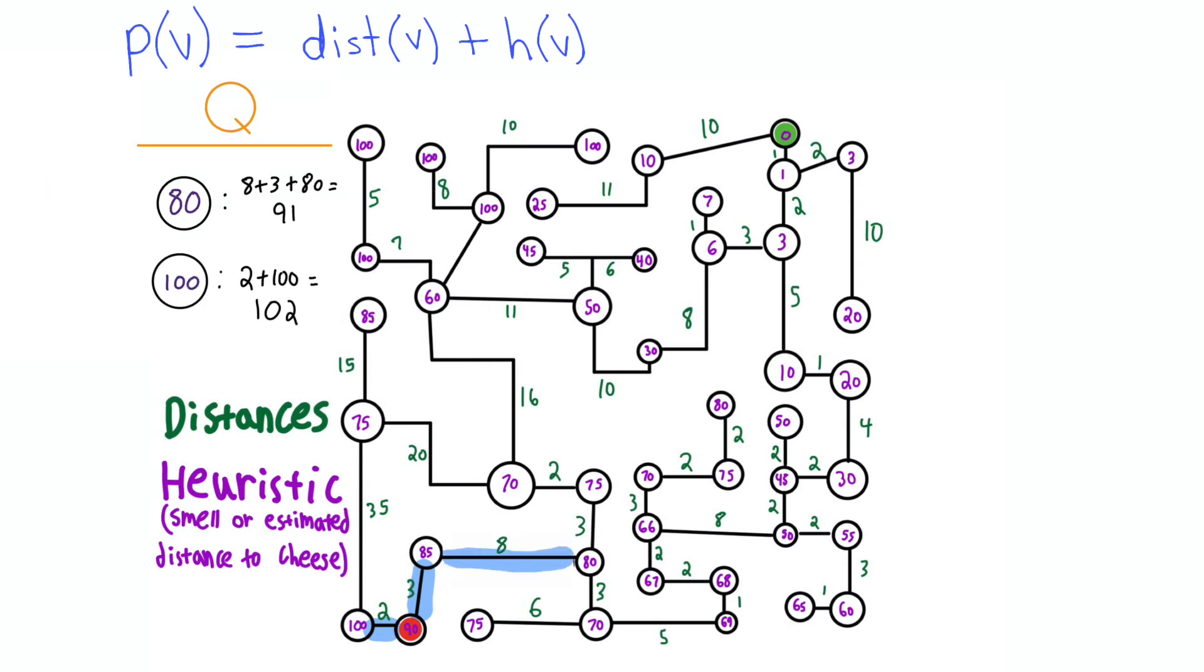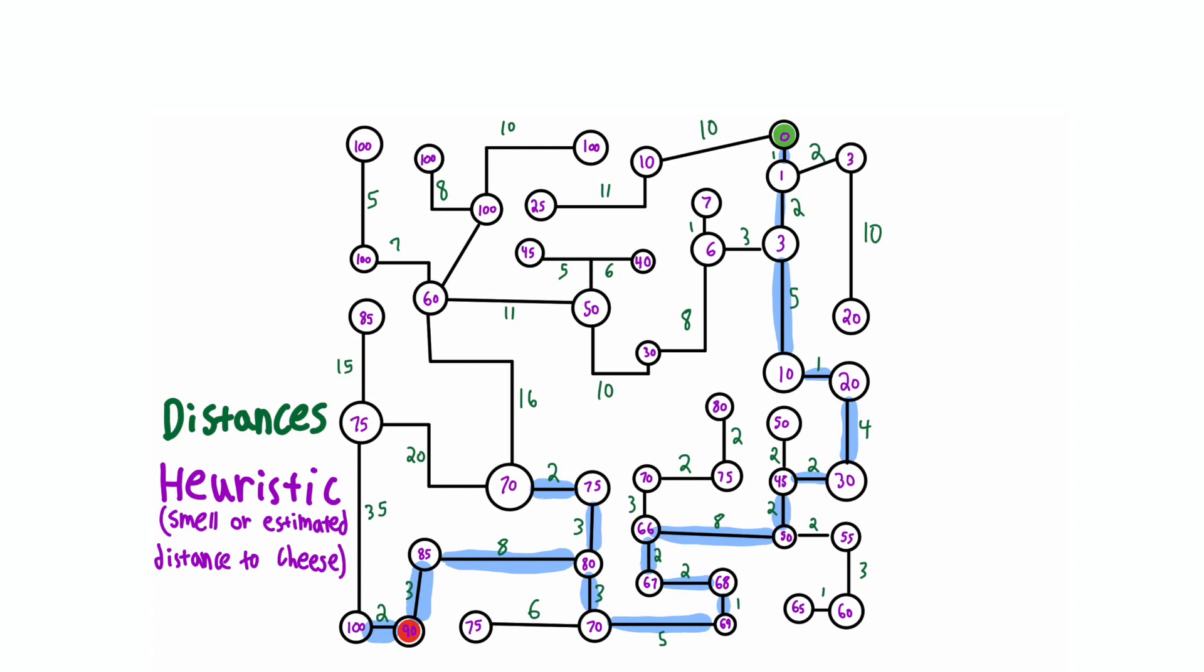If we continue going this way, we'll search these parts of the graph shown in blue. This is way better than an exhaustive search like BFS.